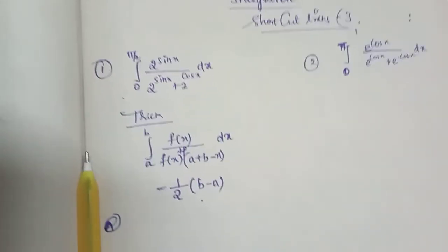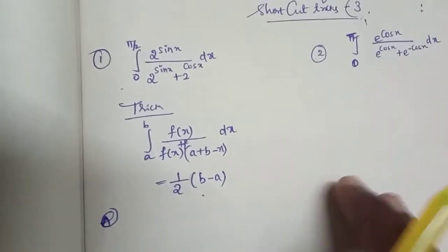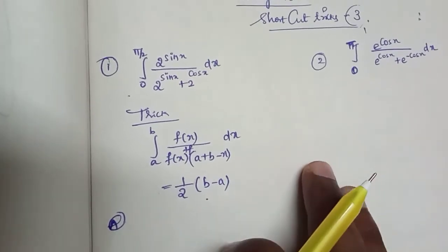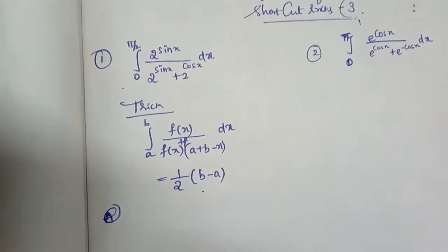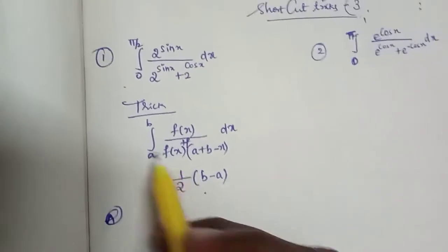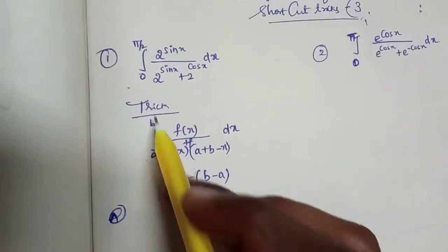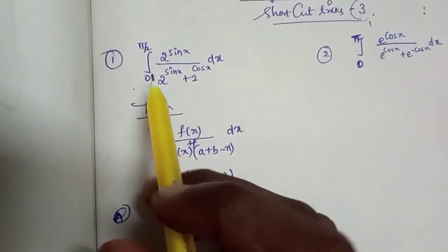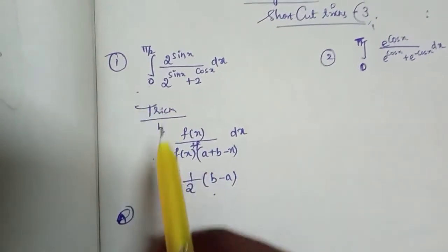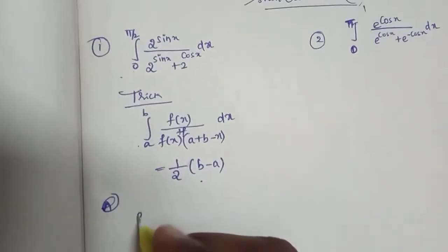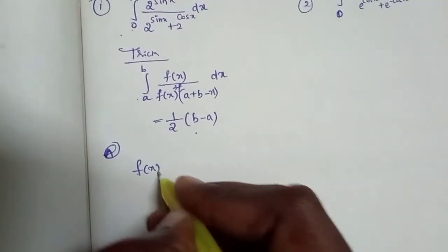I will show you the trick for these types of questions. First of all, here is a key series formula. The integration is from a to b, where a is equal to 0 and b is equal to pi by 2. So f of x is equal to...